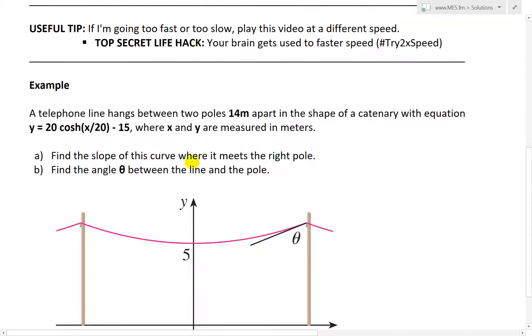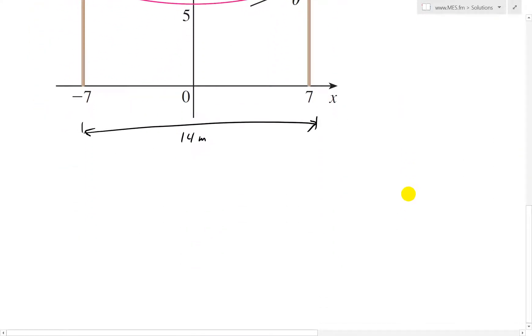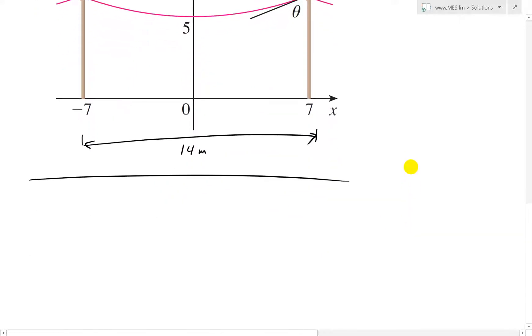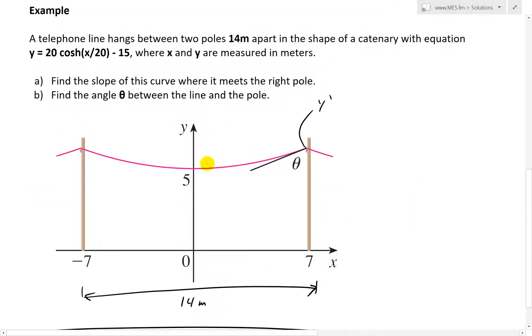Part A says find the slope of this curve where it meets the right pole, so we want to know basically y prime at that location. So let's look at A right here, and again, this equation is y equals 20 cosh x over 20.